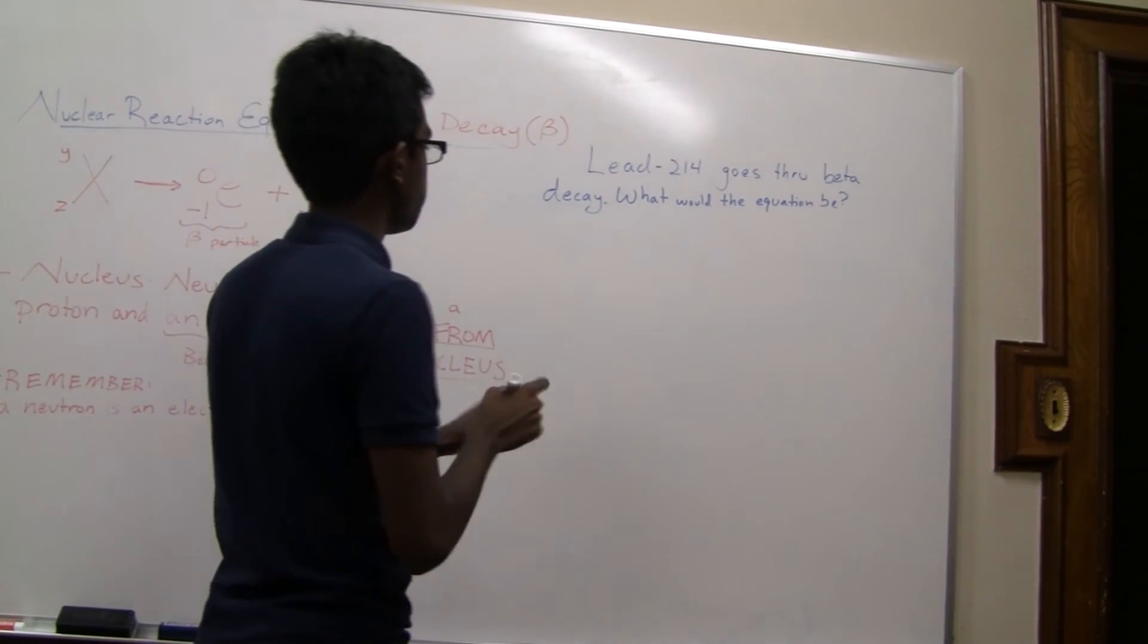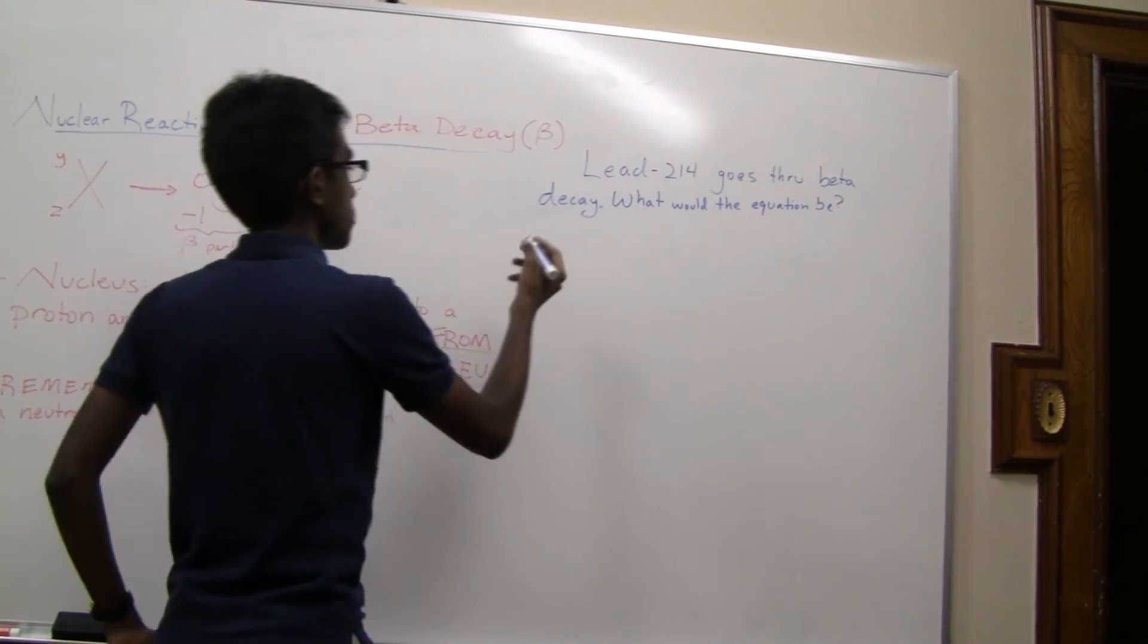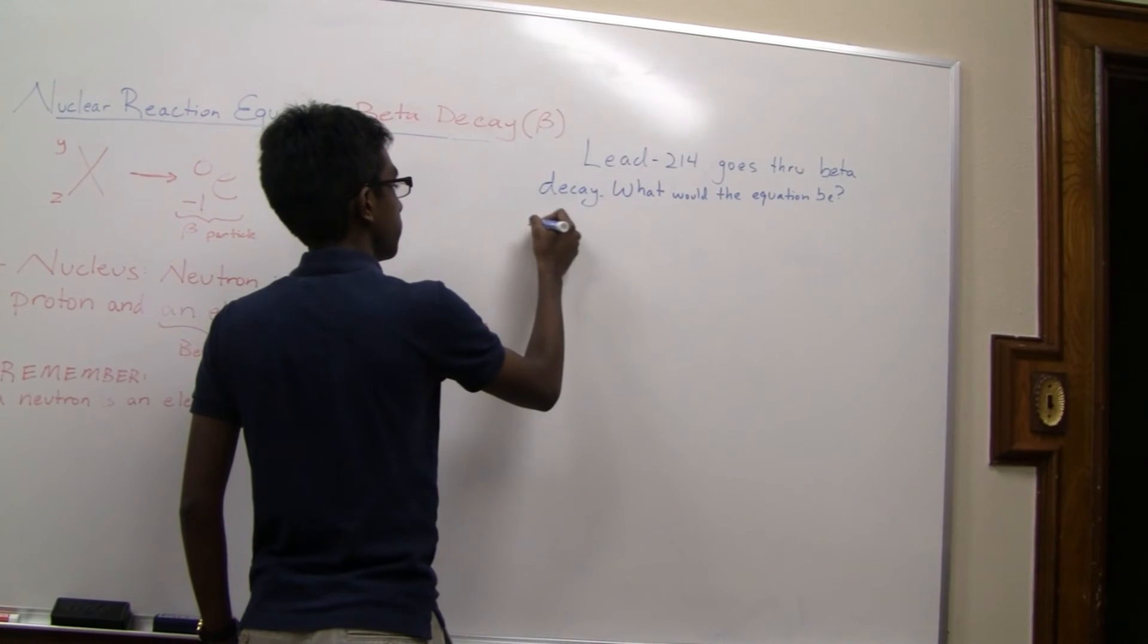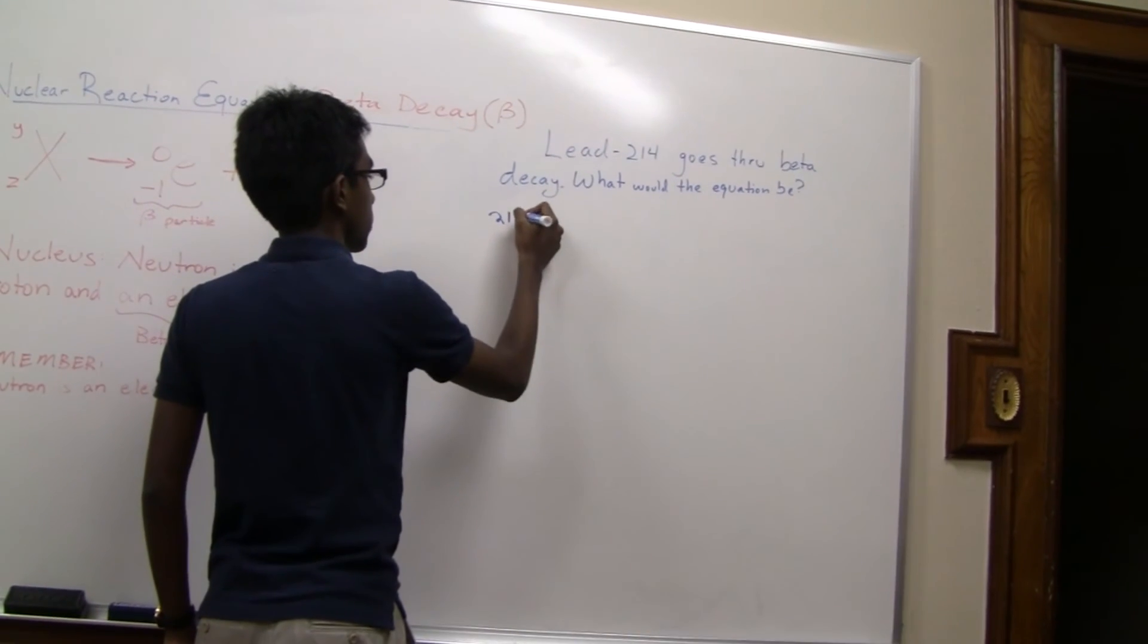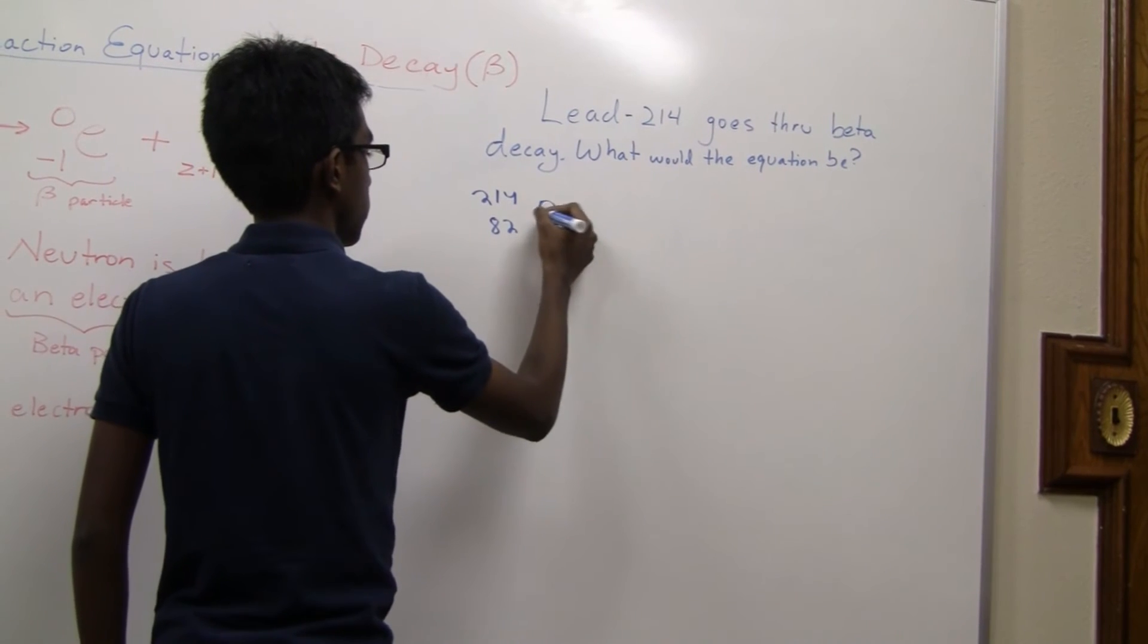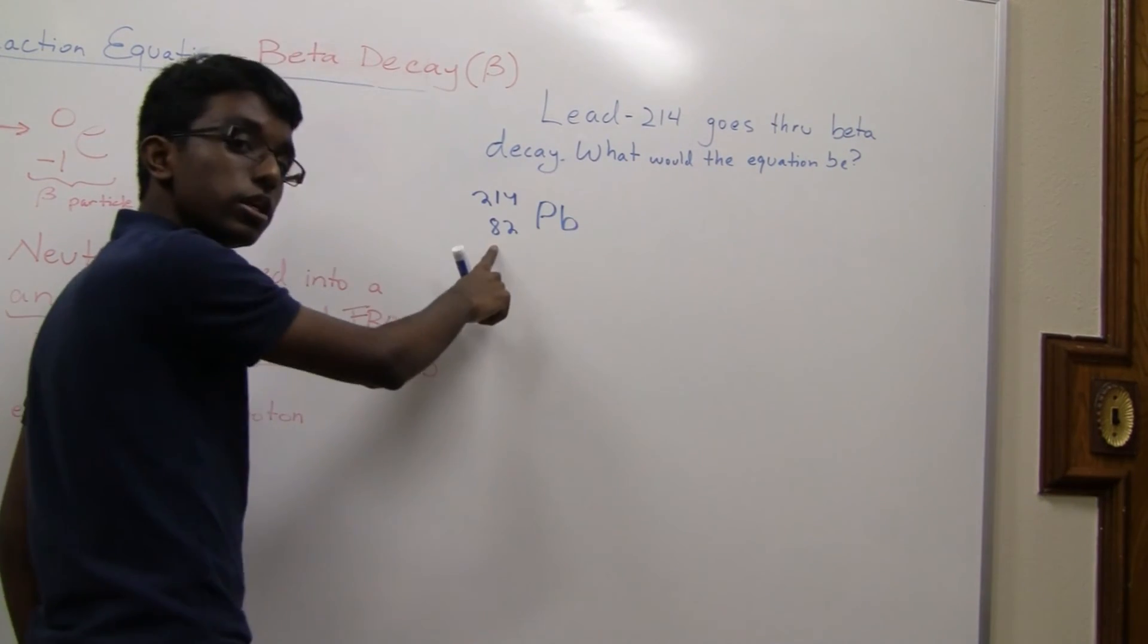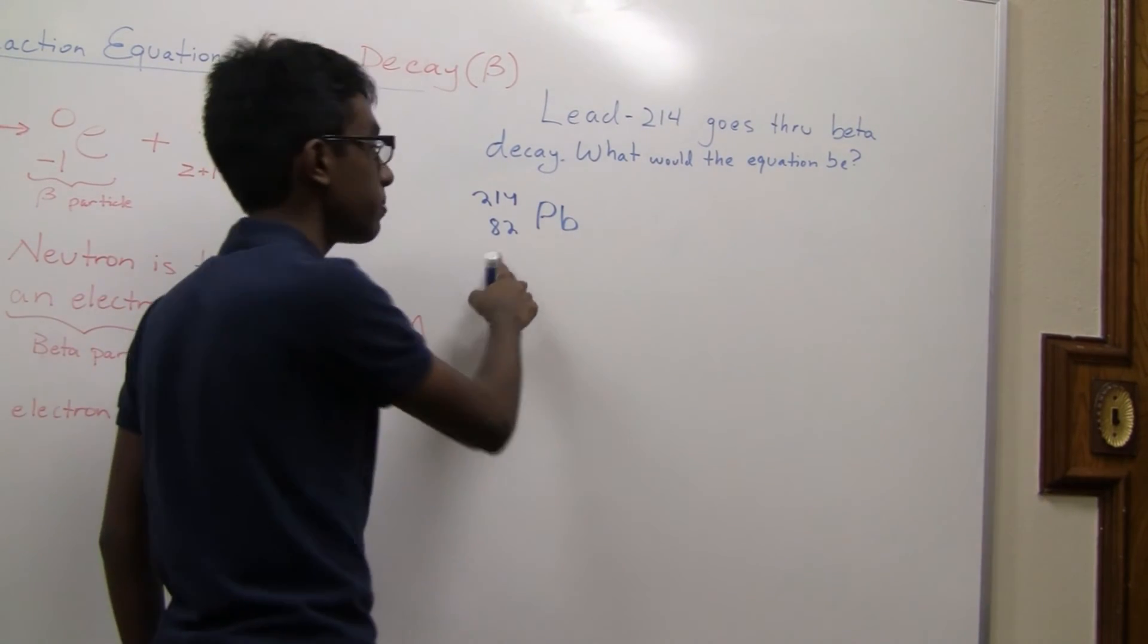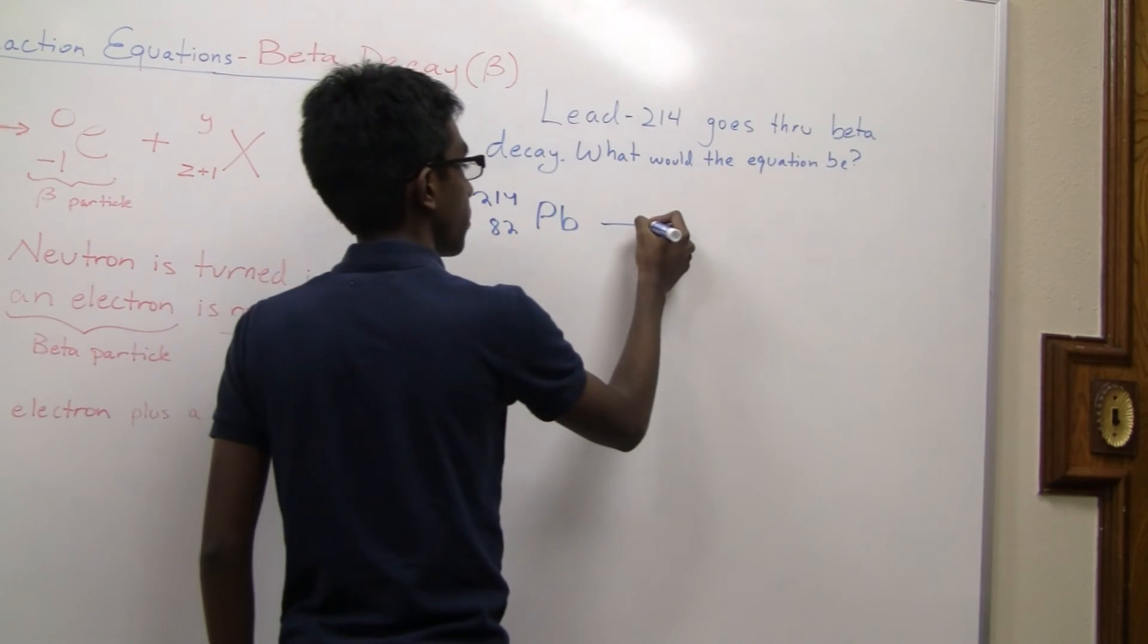So, lead-204. Let's write our original atom. I'm getting 82 here, because that is the atomic number for lead. That's going to release our beta particle.